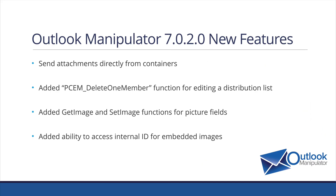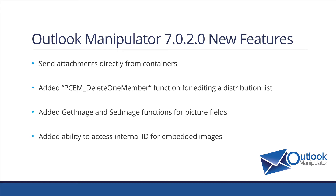We added some abilities to access the internal ID for embedded images. So when you have an embedded image within your email, we can determine the ID for that embedded image so that you could potentially reproduce that email, including the text and images, all in FileMaker.